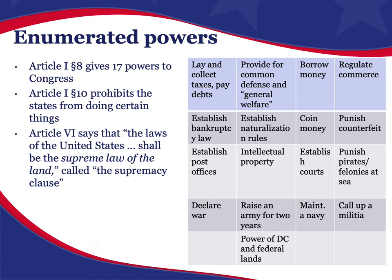Article 1 Section 8 of the United States Constitution gives certain powers to Congress, and Article 1 Section 10 prohibits states from doing certain things — that is where we figure out what is a state power versus a national power. Article 6 says the laws of the United States shall be the supreme law of the land — that's called the supremacy clause, which gives the Constitution its own power. We look to Article 1 Section 8 and Article 1 Section 10 to see what the Constitution actually says about what is given to Congress.